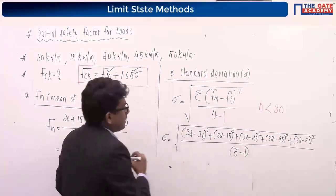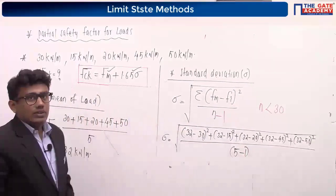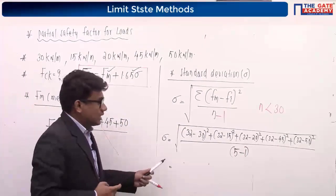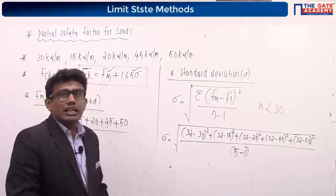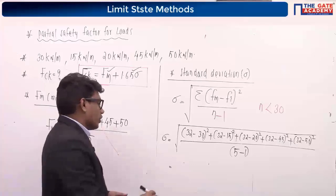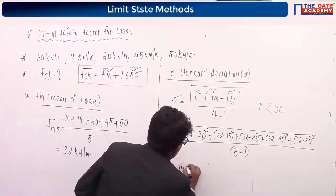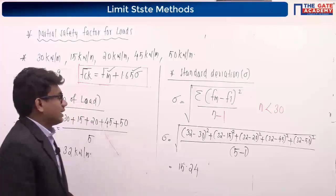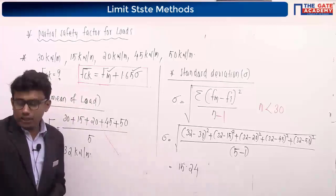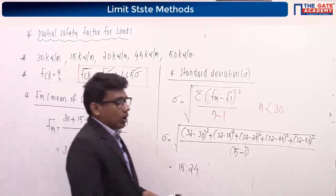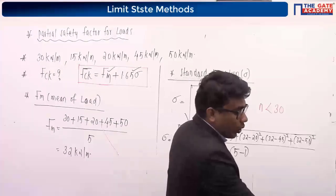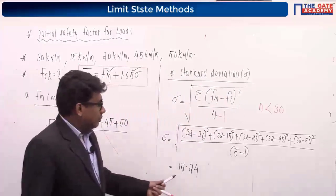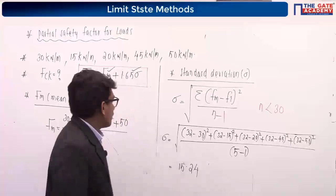After calculating, the standard deviation comes out to approximately 15.24. So we have obtained the mean load Fm as 32 kilonewton per meter and the standard deviation sigma as 15.24.